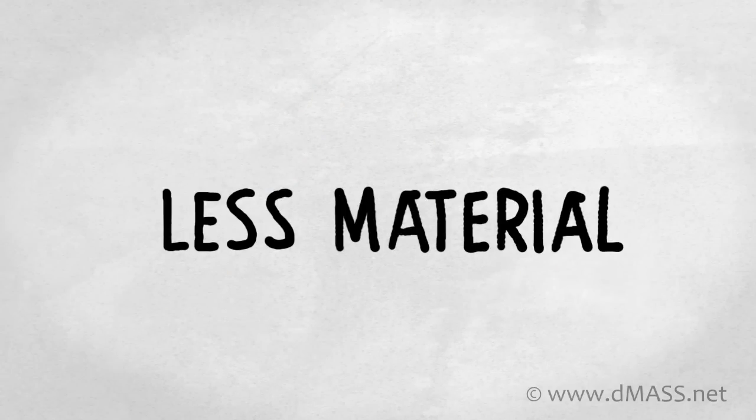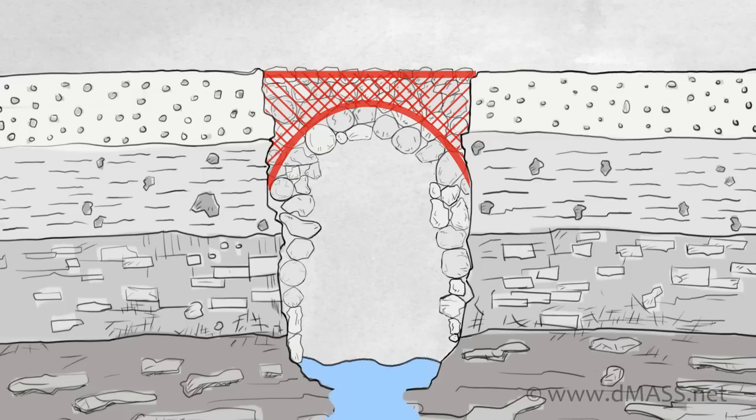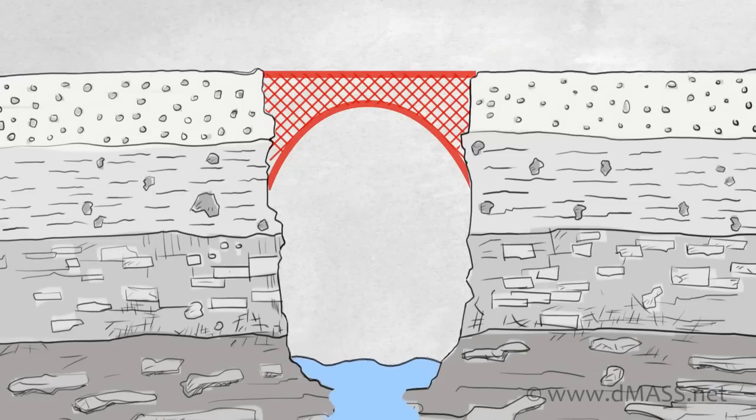So what they did was they replaced the stone above the arch with a triangular truss of iron tubes. And now even more of the mass was eliminated because there was no stone left in the bridge. There was only iron tubes with big spaces in between the tubes.